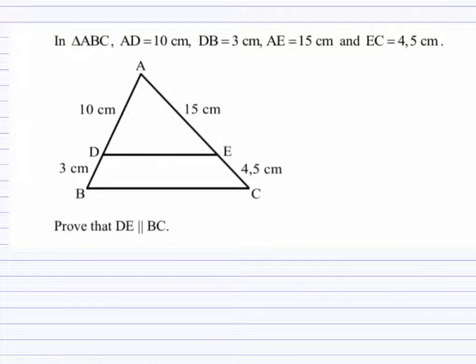In order to prove that, we need to show that the ratios of the sides of the triangle AD and DB, the ratio there is the same as the ratio on the other side of the triangle, AE, EC.